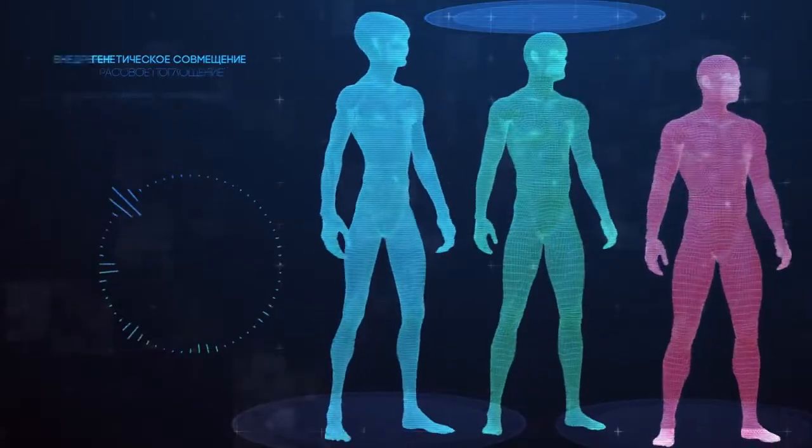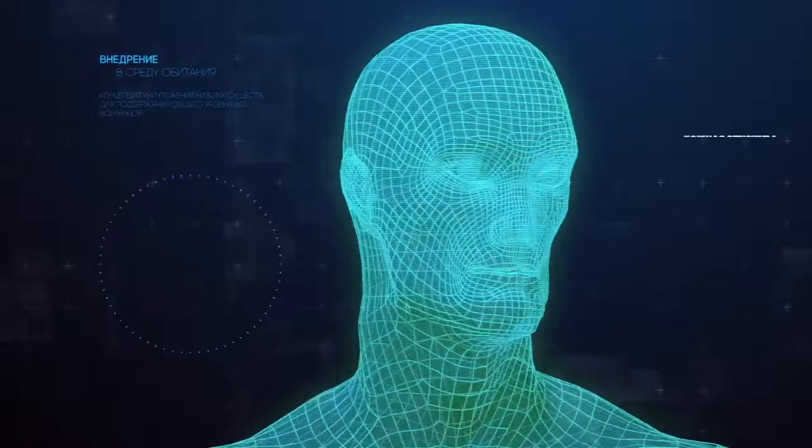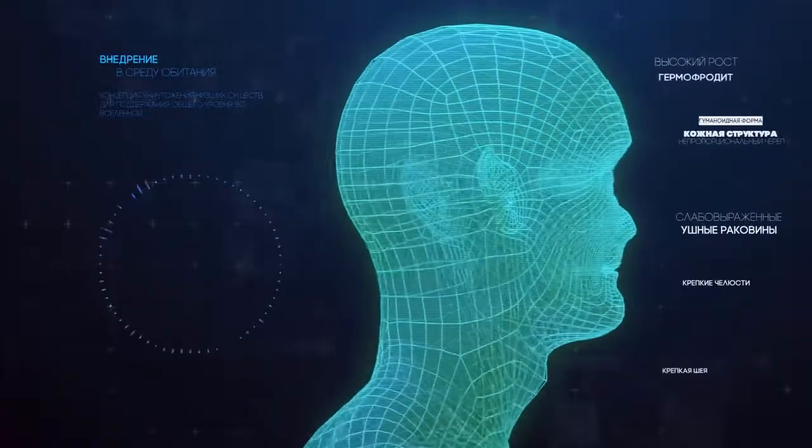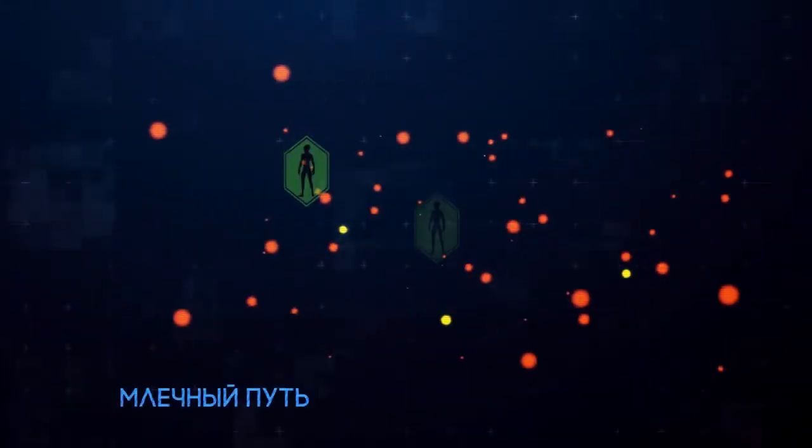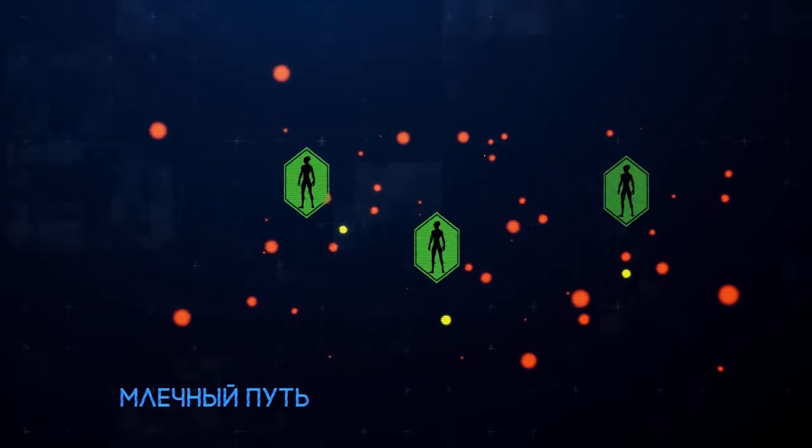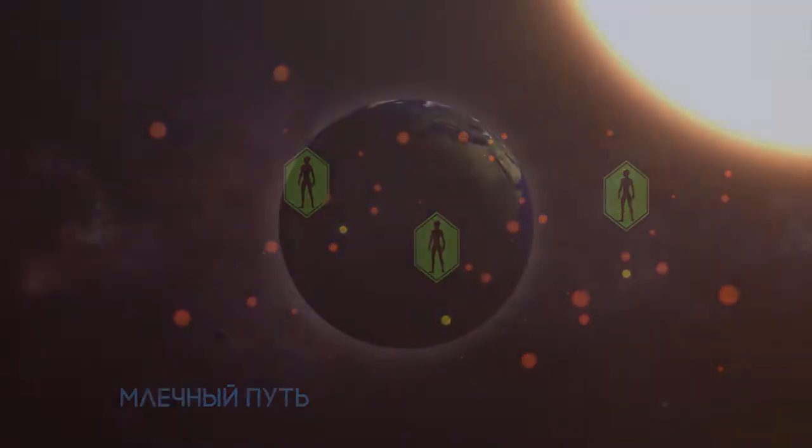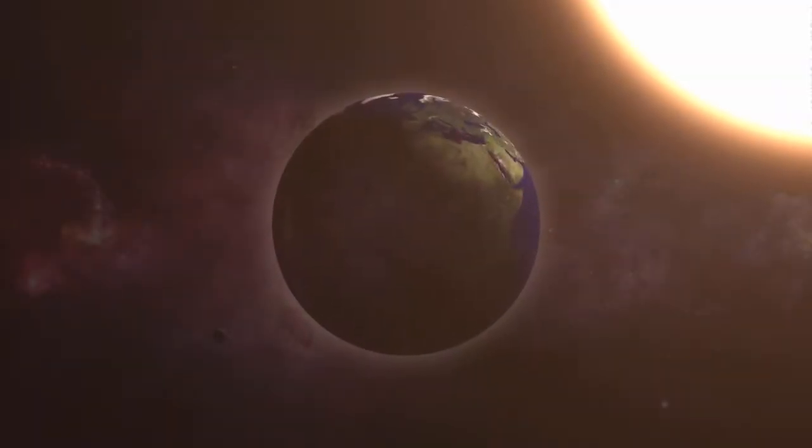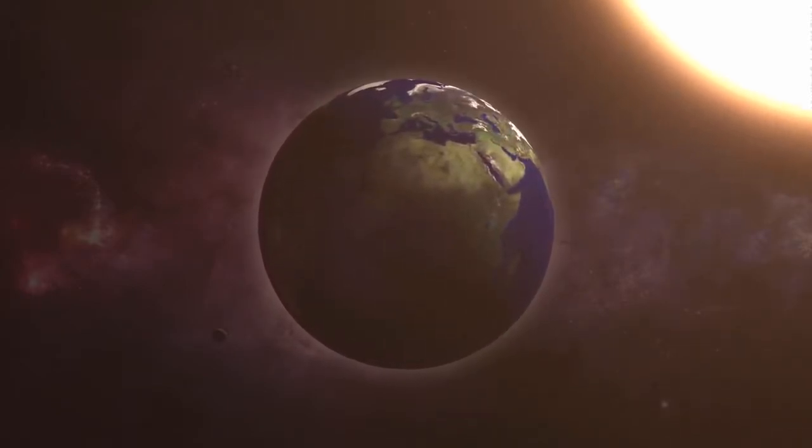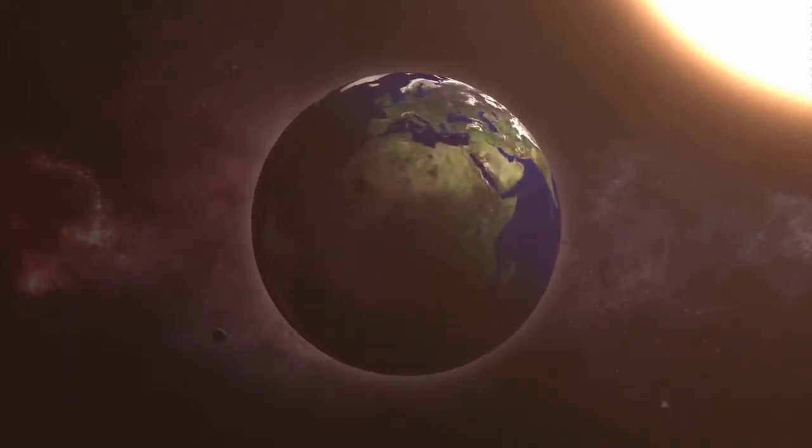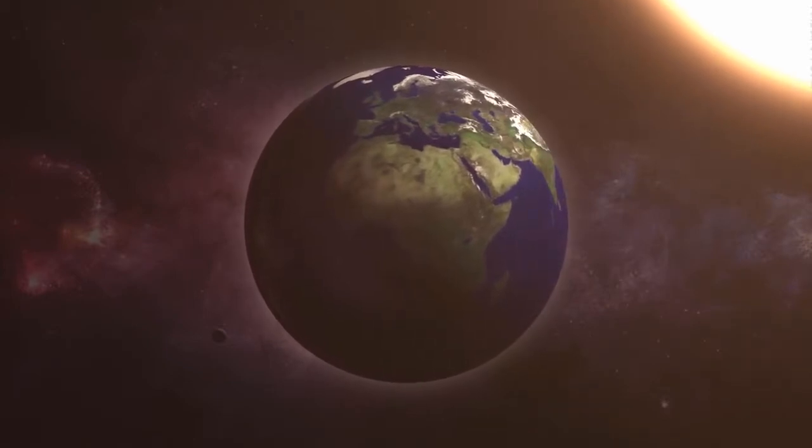На ментальном уровне рептилоиды запрограммированы на покорение и поглощение всех рас и видов, с которыми они сталкиваются. Те, которые не могут быть поглощены ими, должны быть уничтожены. Цель их усилий состоит в получении наиболее совершенной формы в физической реальности, которая могла бы существовать в любых условиях. Согласно данным мифов, ченнелинга и оккультных источников, между гуманоидной и рептилоидной расами неоднократно возникали войны за право обладания Землей.